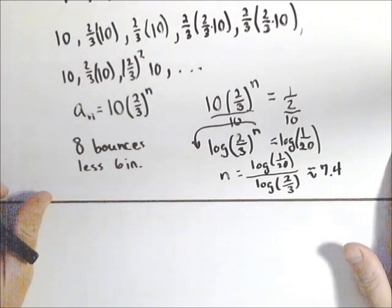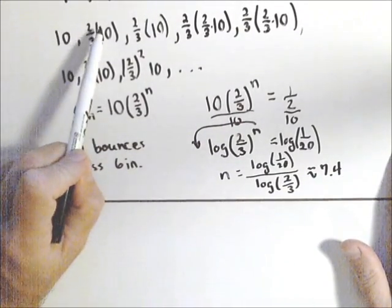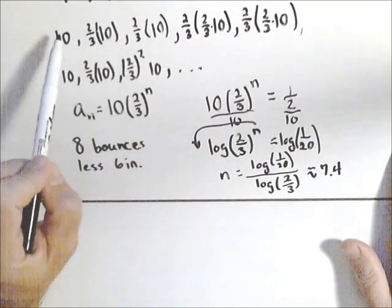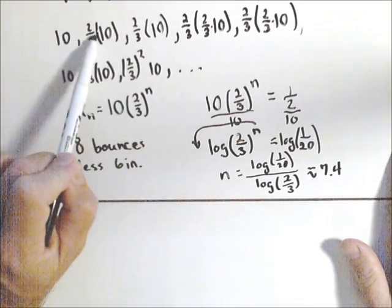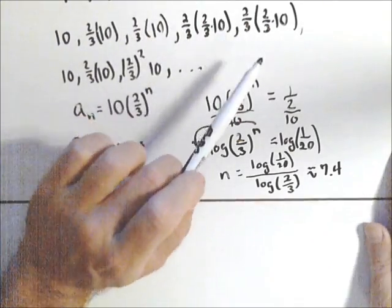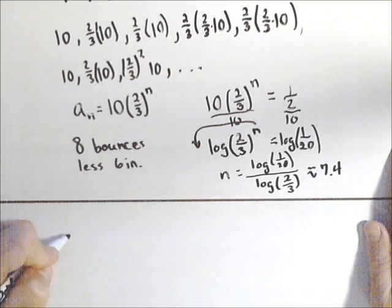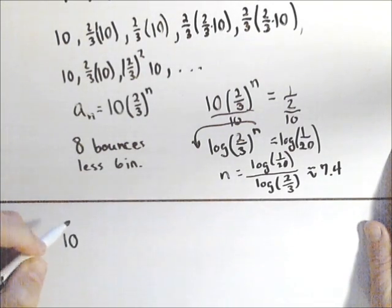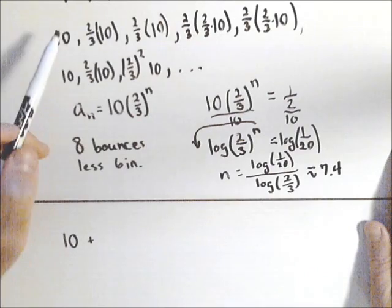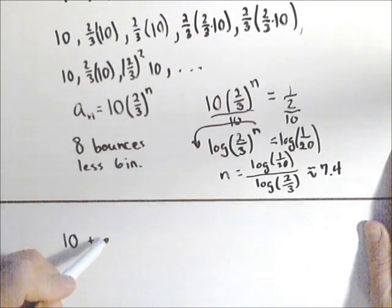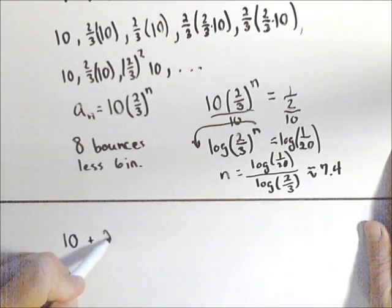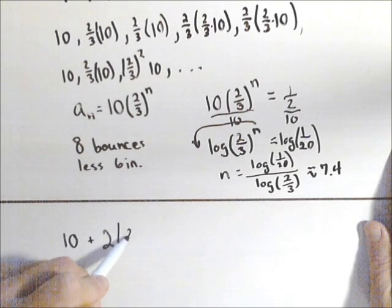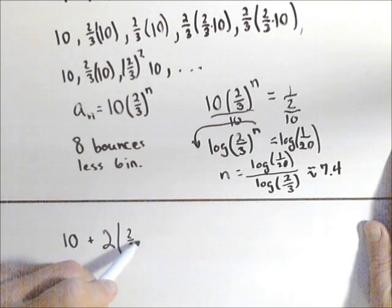So right here I had started doing the bounces. So that was drop, that was first bounce up, down, up, down. So if we look at the pattern here, 10 feet for down, plus, now this one, notice I basically have two of them, so two times two-thirds times 10 because once for up and once for down.